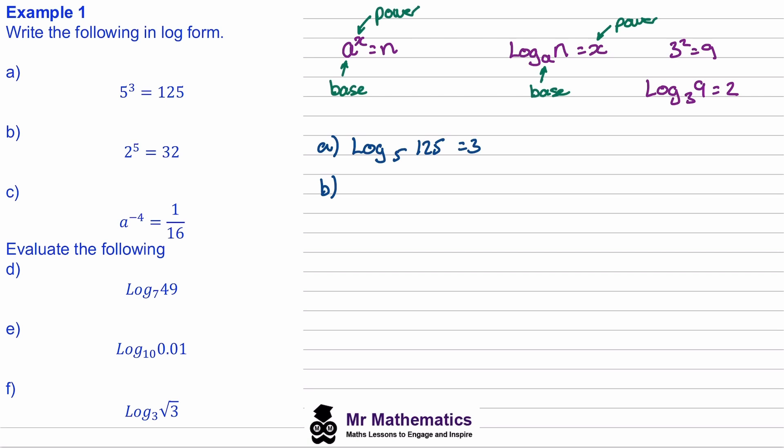Okay, so welcome back if you had a go. So for b, it'll be the log of 32 to a base of two will give us our power five. And then for c, the log of 1/16 to the base of a will give us negative four.